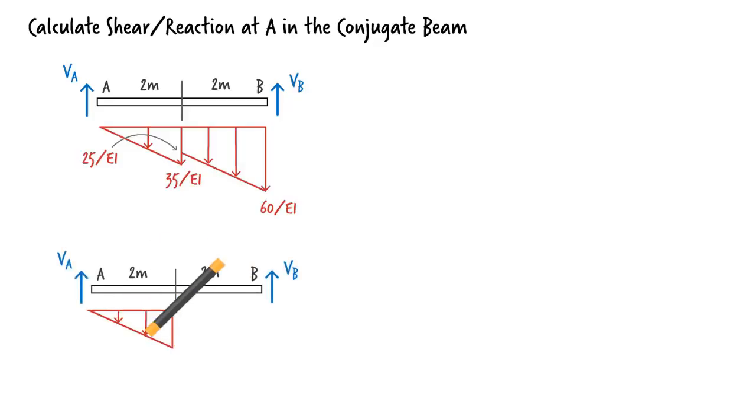Then replace each with its equivalent concentrated load. The M over EI diagram can be divided into two triangular loads and one rectangular load.